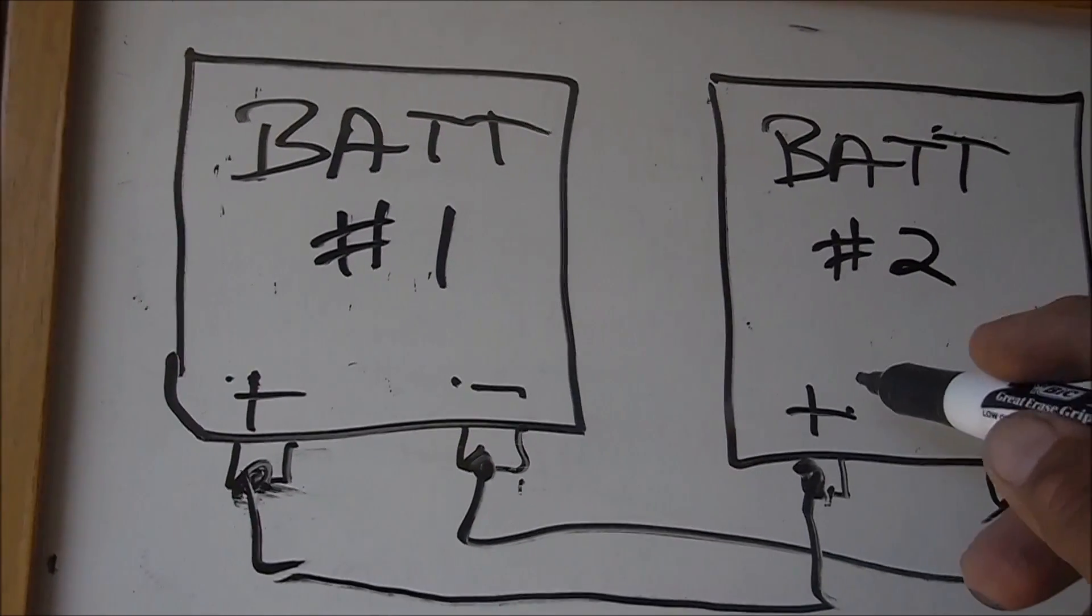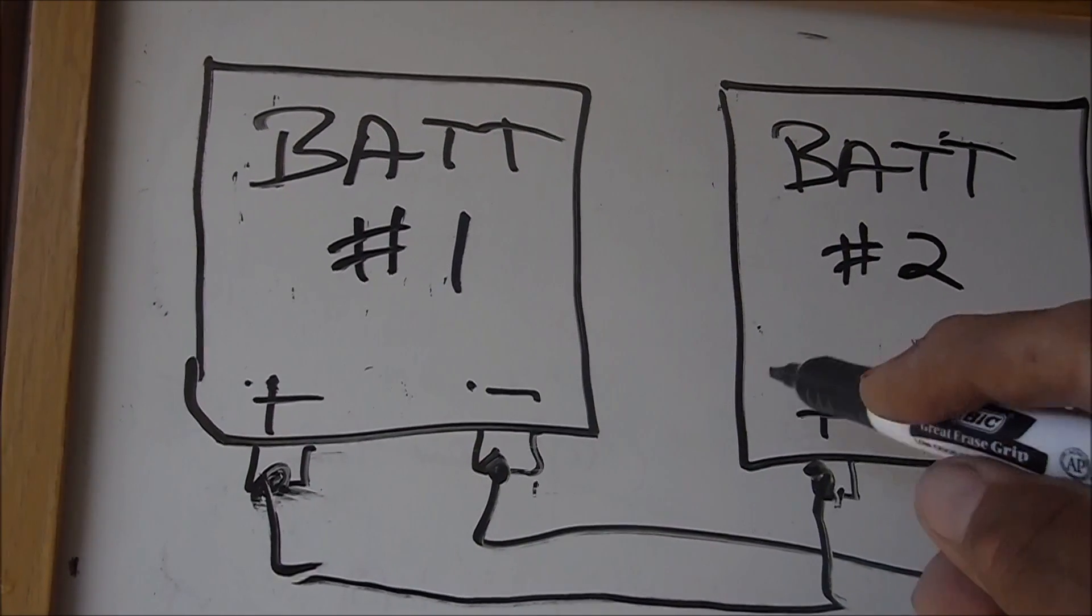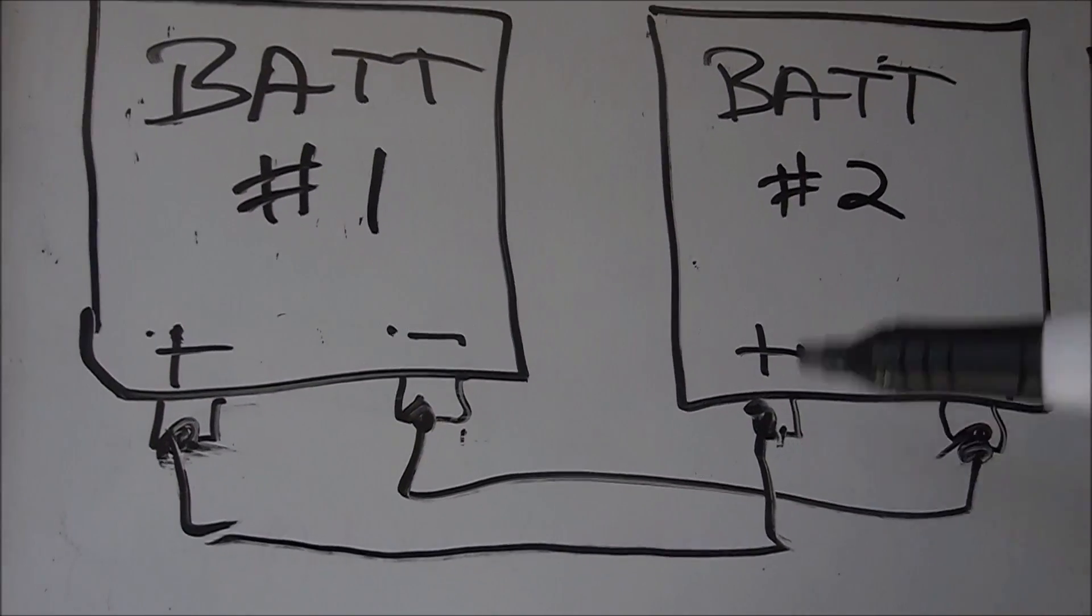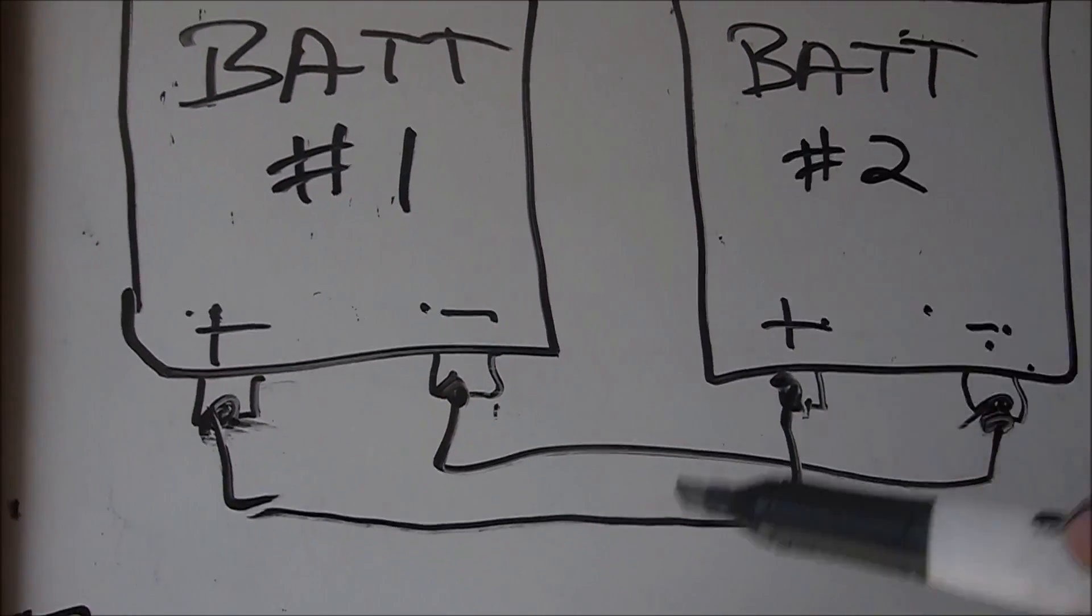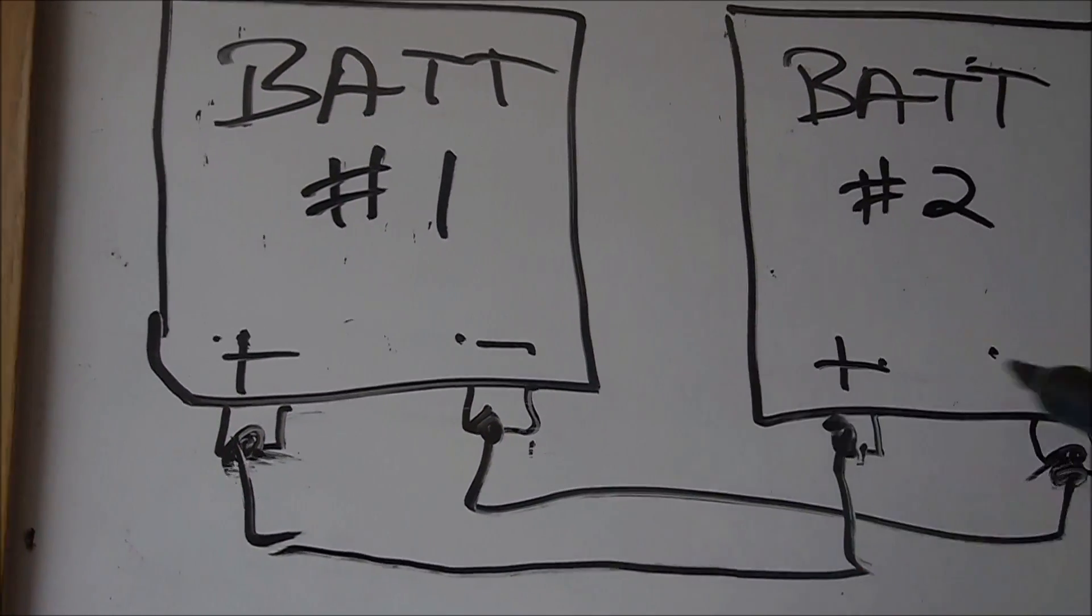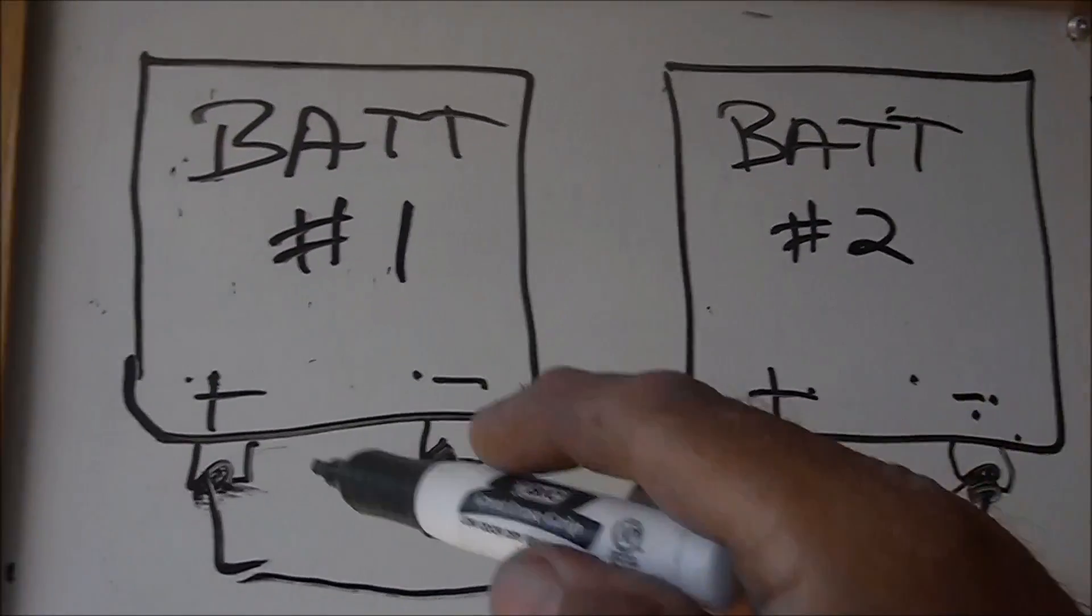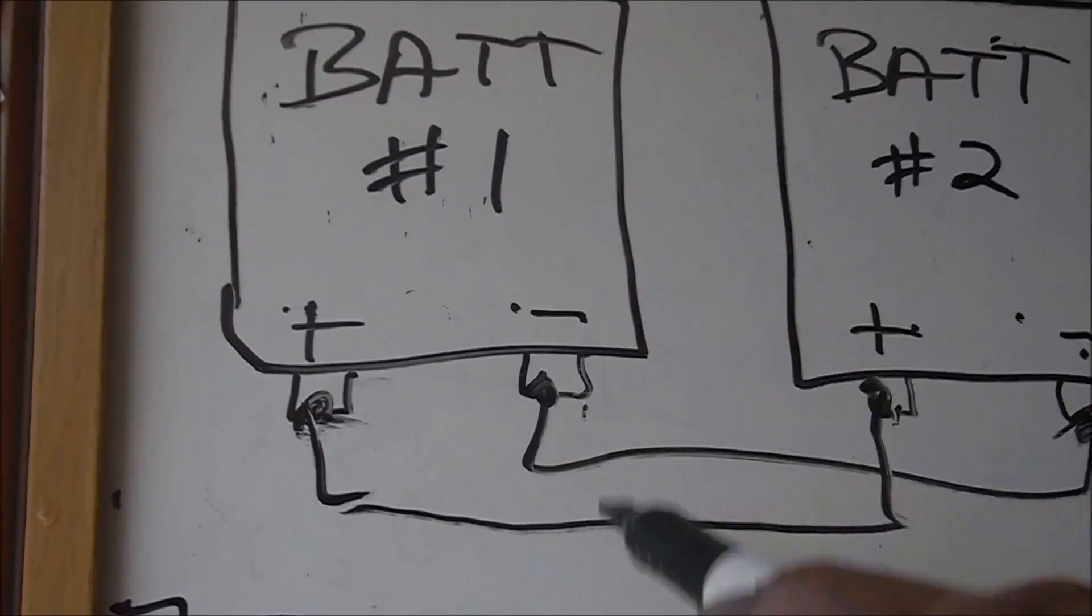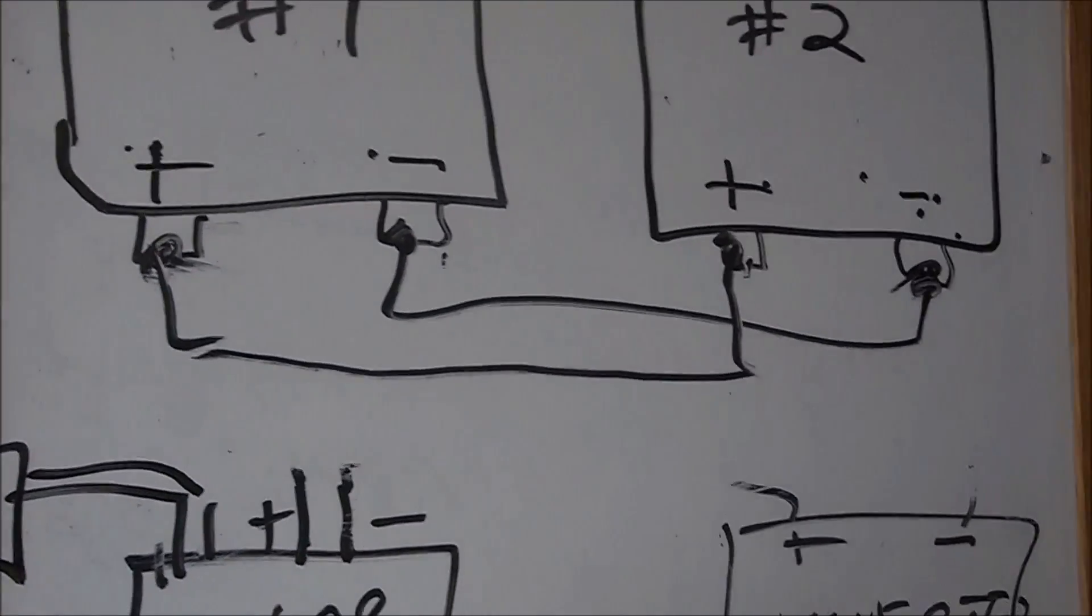The reason we do this is when one battery is lower than the other. Actually, in parallel, it keeps the voltage the same, the current changes. So you have a little more juice out of it. If you were to go positive to negative here, that means from this point to this point you'd have 24 volts, so you don't want to do that. It's not wrong, just for a different application.